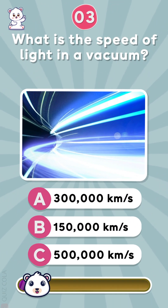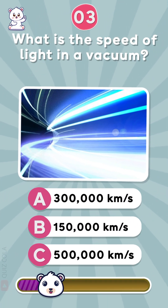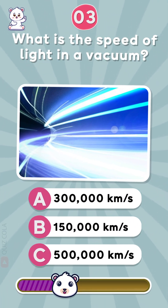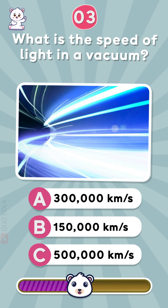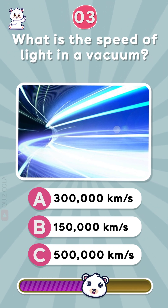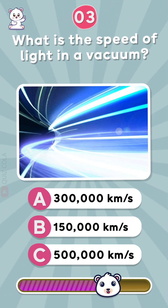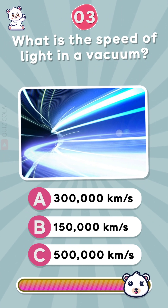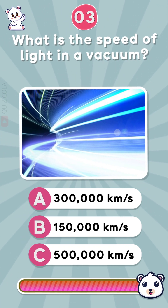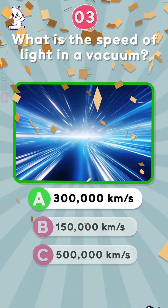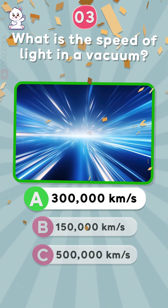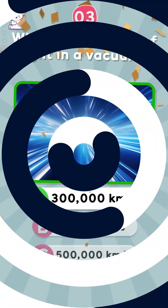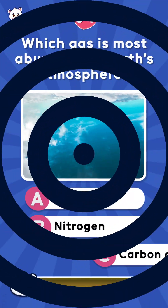What is the speed of light in a vacuum? 300,000 km per second, 150,000 km per second, or 500,000 km per second? You got it! The speed of light is about 300,000 km per second.